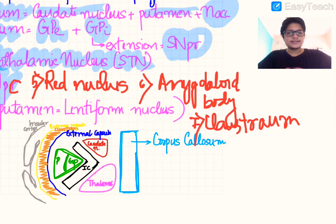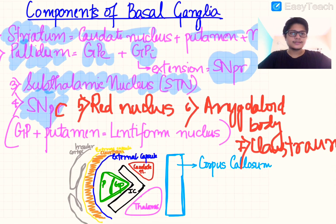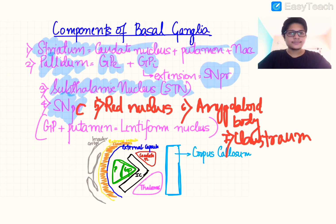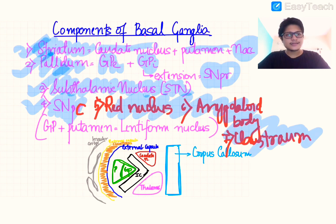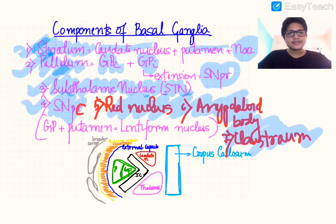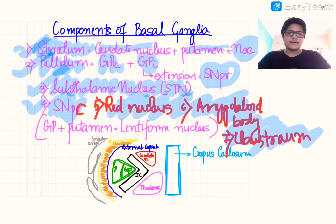These are essentially the seven components of basal ganglia. To understand the functionality of basal ganglia, the four principal components we need to understand are the striatum, pallidum, subthalamic nucleus, and substantia nigra pars compacta. The other three are mainly accessory components which form part of the neural pathways.